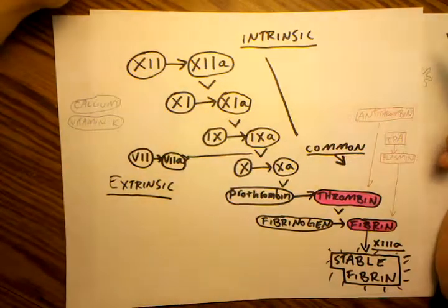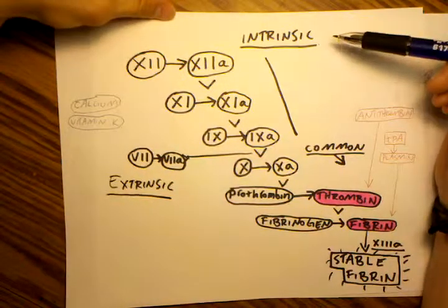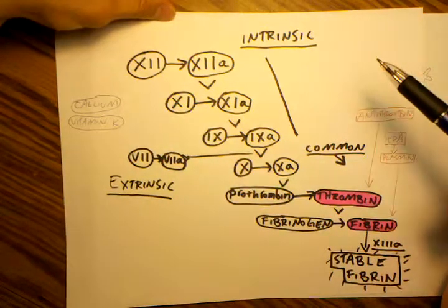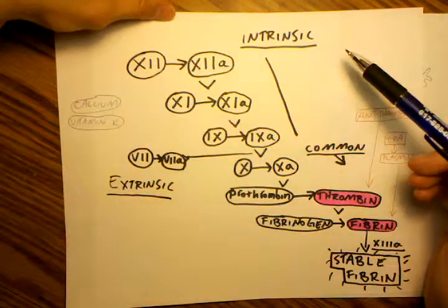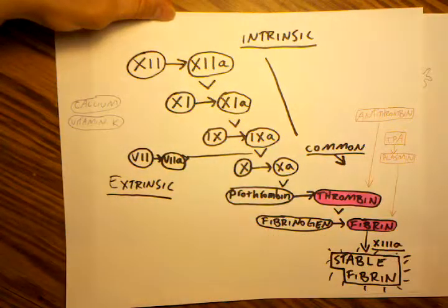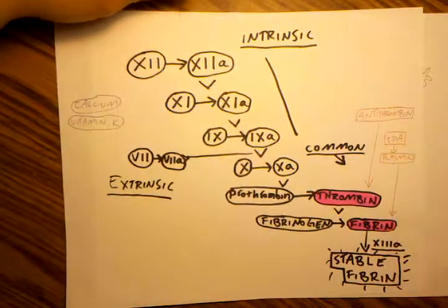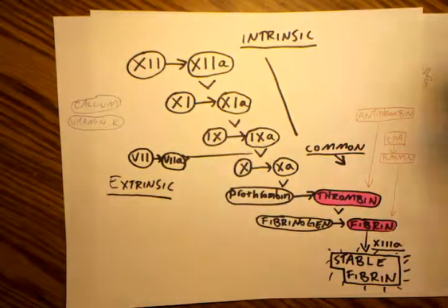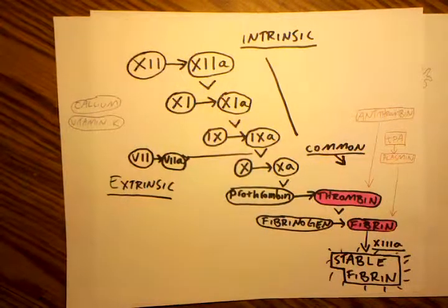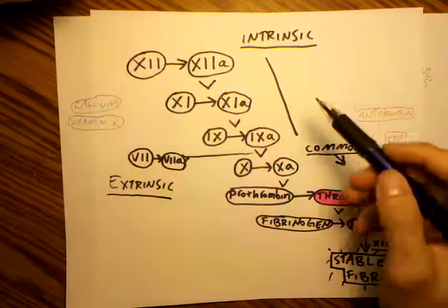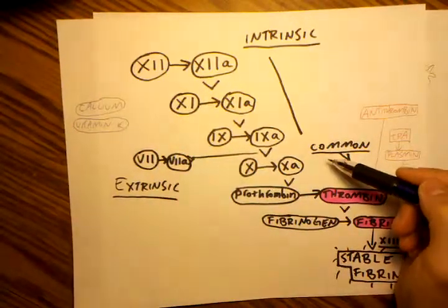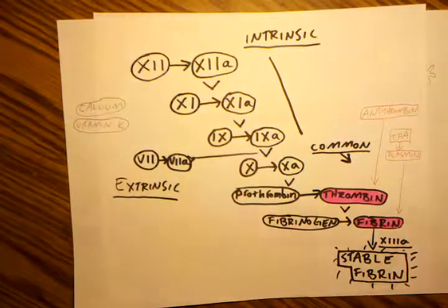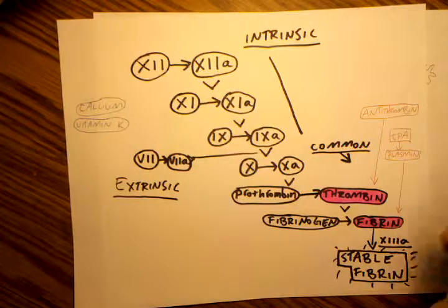You got two main pathways: it's called the intrinsic pathway and the extrinsic pathway. These are also called the contact activation and the tissue factor pathways. But they're both activated with injury to the vessel and then they follow different paths and then they meet up at what's called a common pathway. And from there on they're just doing the same thing.